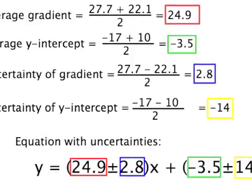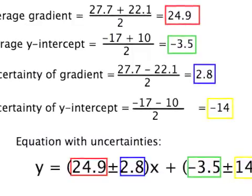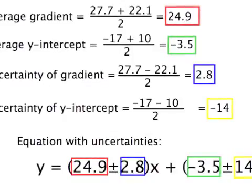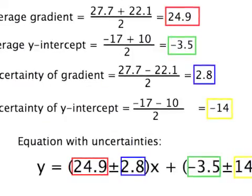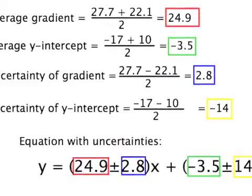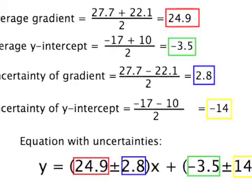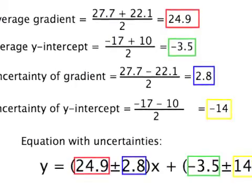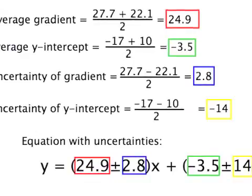Once we've found the gradient and y-intercepts of the maximum and minimum lines that best fit, then we have to figure out the average of these and determine the uncertainties. The average is calculated by adding the two numbers and dividing by two, and the uncertainties are found by finding the range of the maximum and minimum by subtracting them and then dividing by two.